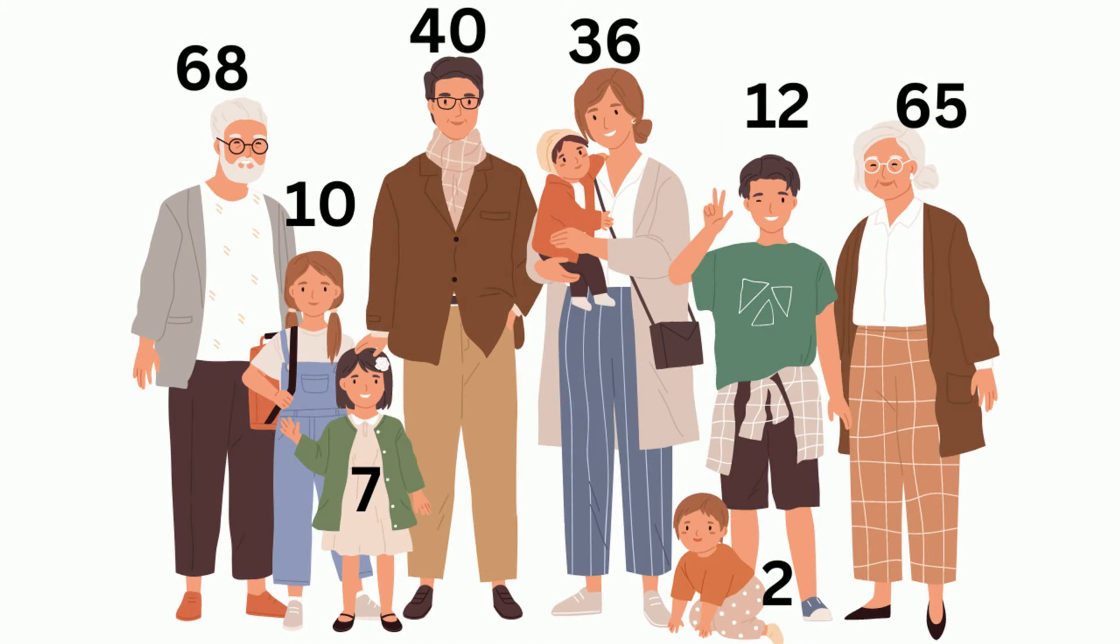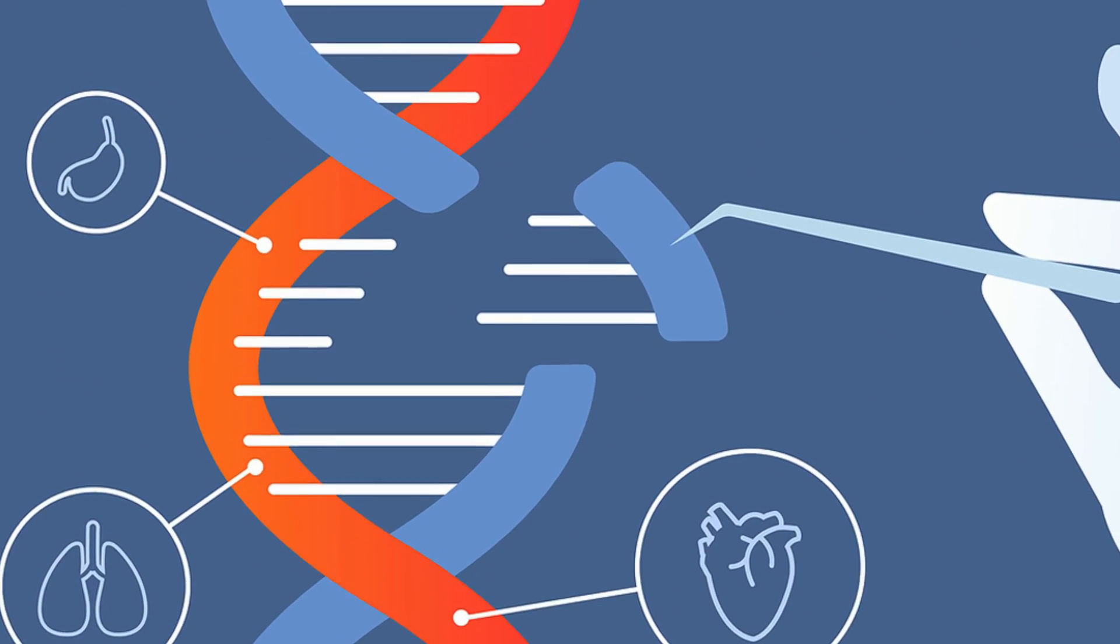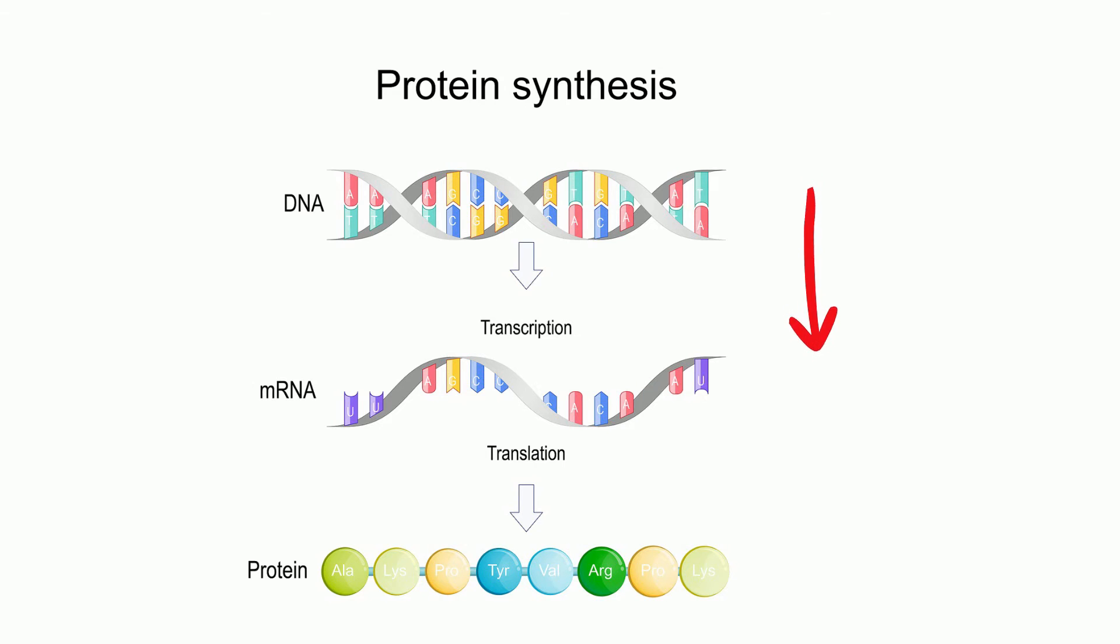The sequence of base pairs in DNA determines the genetic information that is passed on from parents to offspring. Genes are segments of DNA that contain the instructions for making proteins. The order of the base pairs in a gene determines the amino acid sequence of the protein.